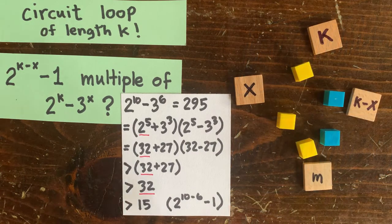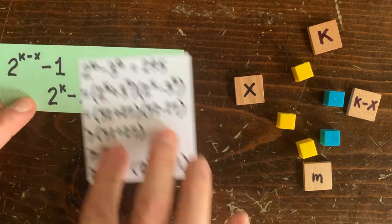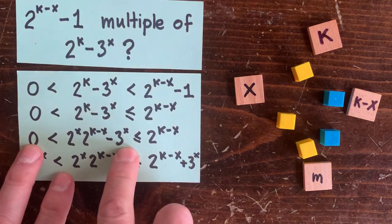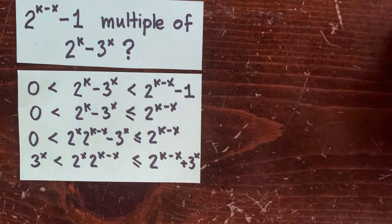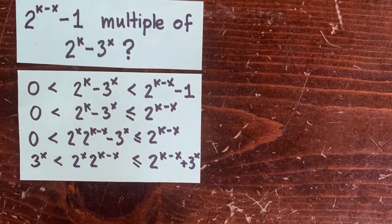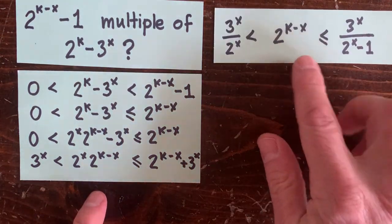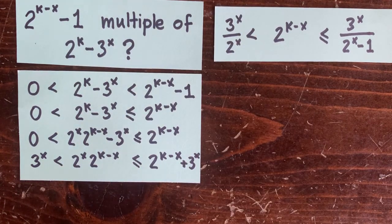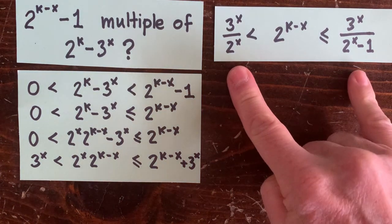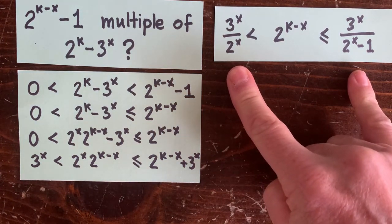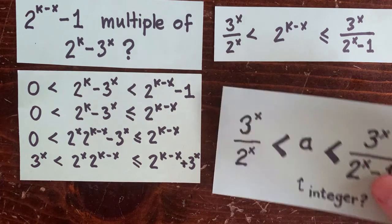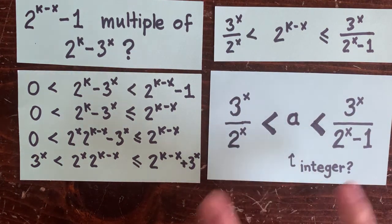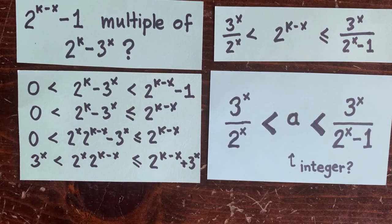Okay, so to make a valid loop, we need this to be bigger than this. And we want this bigger than zero, so our loop will contain positive integers instead of negative ones. Let's rearrange the terms to put 2^(k-x) in the middle. And to make a loop, 2^(k-x) has to be an integer that squeezes in between these two things. And now we could be even more aggressive and try to show that no integer a squeezes in between these two things for any x.